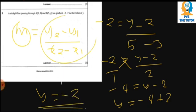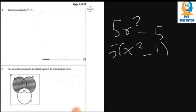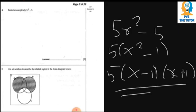For Question 4, we first need to factor out what is common — 5 is common, so we take it out. Then we can further factorize the remaining x² - 1 using the difference of two squares, giving (x - 1)(x + 1). So we have 5(x - 1)(x + 1). That's how you factorize this type of problem.